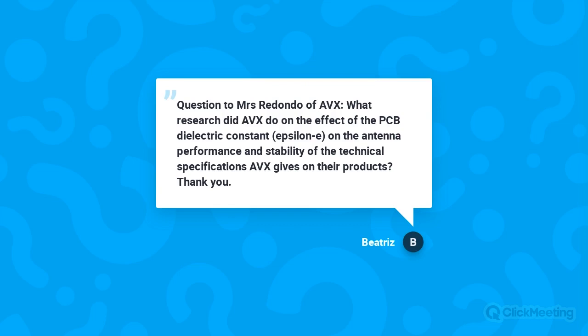Question: What research did AVX do on the effects of PCB dielectric constant (epsilon r) on antenna performance and stability of technical parameters? Carmen's answer: The dielectric constant of the PCB substrate doesn't affect the mounted antenna performance very much. It might affect performance if you print the full antenna directly on the board — which is why we normally don't recommend using that kind of antenna, especially for covering large bands like NB-IoT or LTE-M.